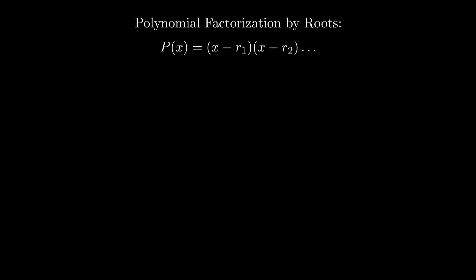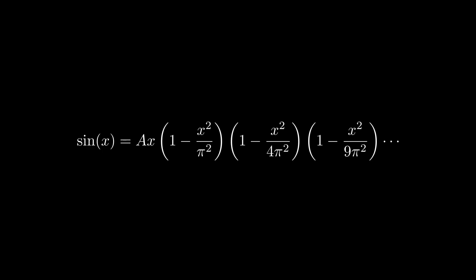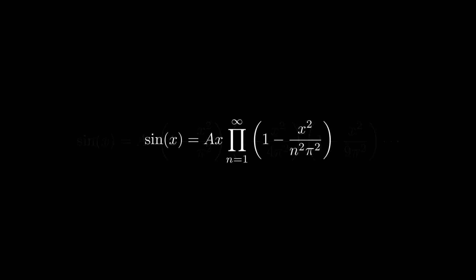Just like a polynomial can be factored by its roots, an infinite series can also be expressed as an infinite product based on its zeros. For the sine function, which has zeros at x equal n pi for any integer n, its infinite product representation is given by sine of x equals a times x, multiplied by products of 1 minus x squared over n squared pi squared.